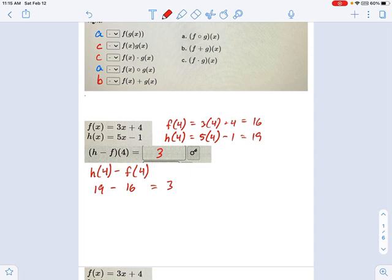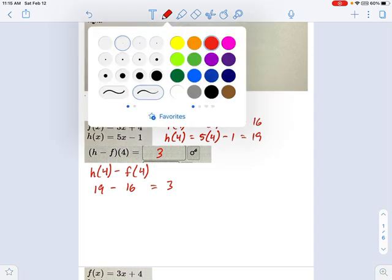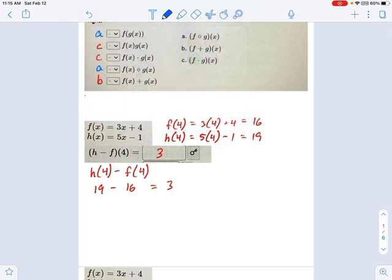Now, there's another way to do this, which is the following. I could have said, hey, wait a minute. Let's just figure out what h minus f of x is, and then put in 4 in place of x. So you see what h and f are above.